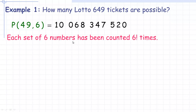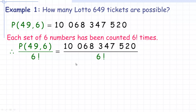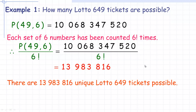Each set of six numbers has been counted six factorial times, because there are six factorial — or 6 permute 6, which is six factorial — number of ways to arrange six objects in different orders. So while each group of six numbers should be counted only once, they're actually counted six factorial times too many. In order to get the number of Lotto 649 tickets, we take that 10 billion number and divide it by six factorial. And if we divide that out, we get a number just under 14 million — there are 13,983,816 unique Lotto 649 tickets possible.